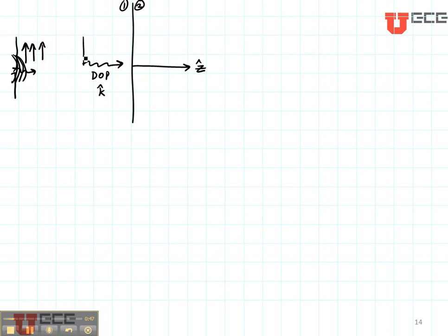So I would end up with an incident electric field that's polarized in this vertical direction. Let's say for this problem that that's the X direction.